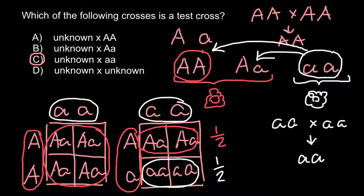In breeding programs, many breeders work with very small samples — sometimes only 2-3 plants, or even just one animal with unique properties. So the best way to find out if a locus is in a homozygous or heterozygous state is to cross it with a known homozygous recessive genotype. If it is heterozygous, we would see segregation of the trait in the F1 generation.